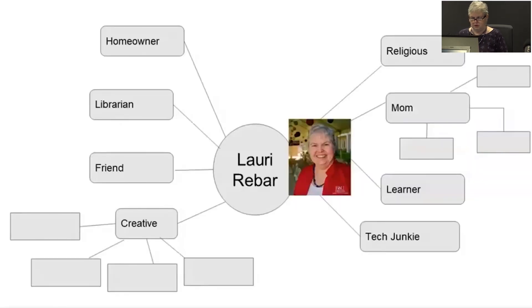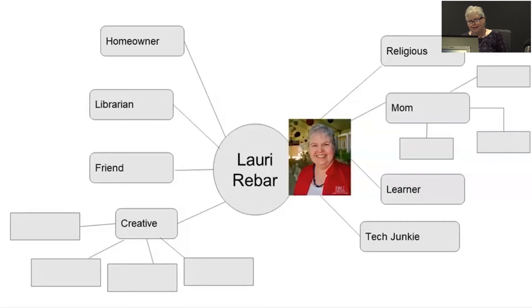The exercise is about thinking about yourself, the different roles you play, and the different components of who you are. The presenter demonstrates on a whiteboard, showing a personal concept map with family — two children and a daughter-in-law — as one branch, with other components added as well.